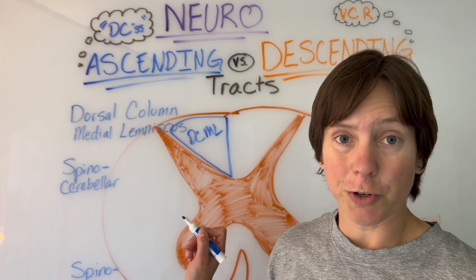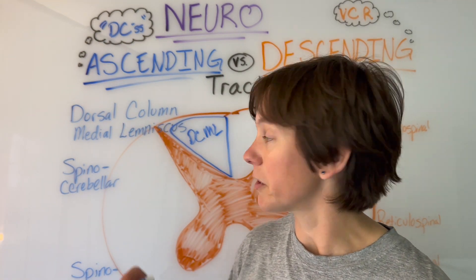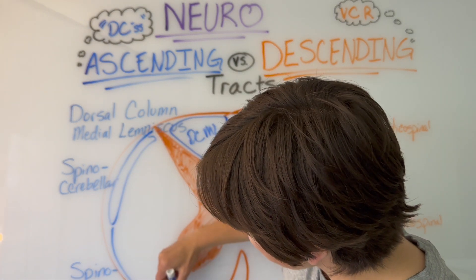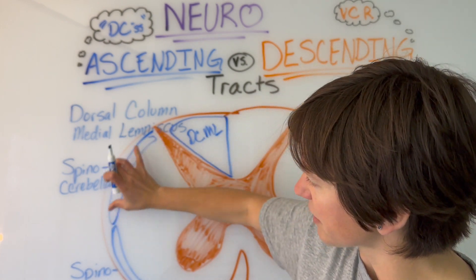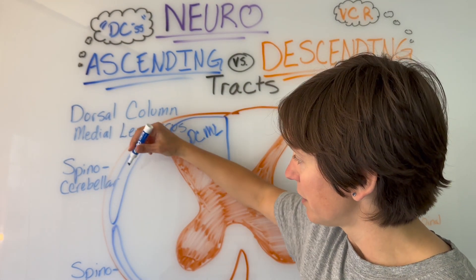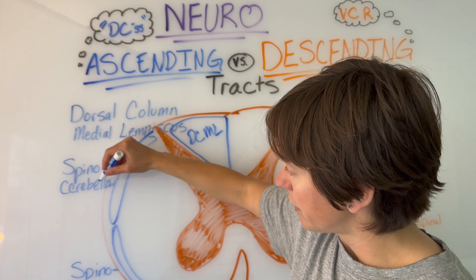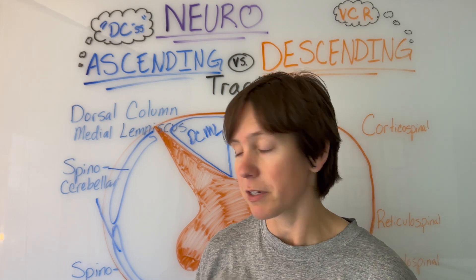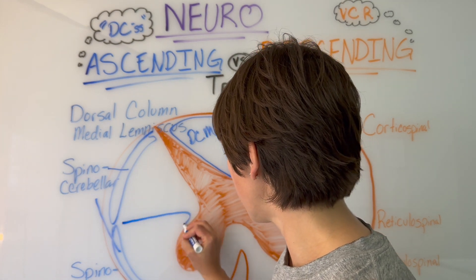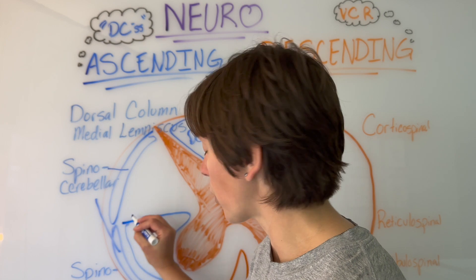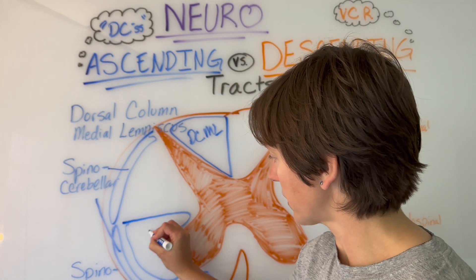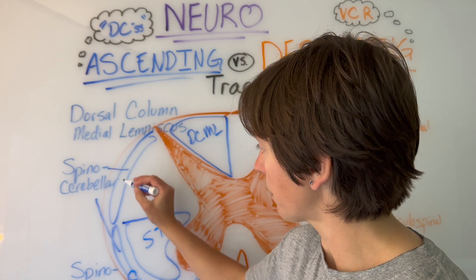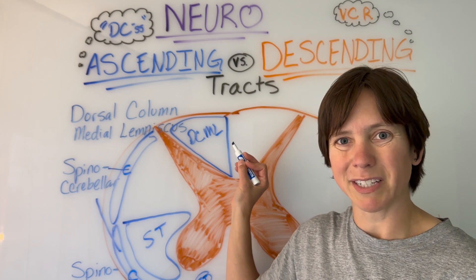The spinocerebellar tracts are long tubes that run along the border, forming a crescent shape — think of the C in spinocerebellar. The spinothalamic tract comes in here and wraps around the horn, with a small area here as well. So we have spinothalamic, spinocerebellar, and the dorsal column medial lemniscus.